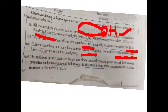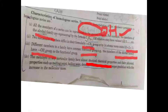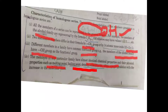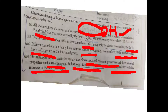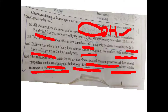Members of the alcohol family have the OH group as a functional group. The members in any particular family have almost identical chemical properties, and their physical properties such as melting point, boiling point, density, and solubility show a proper gradation with the increase in molecular mass. So this is regarding the characteristics of the homologous series.